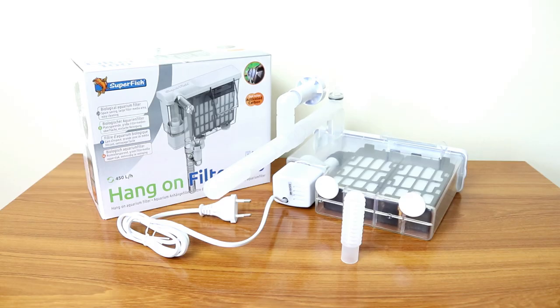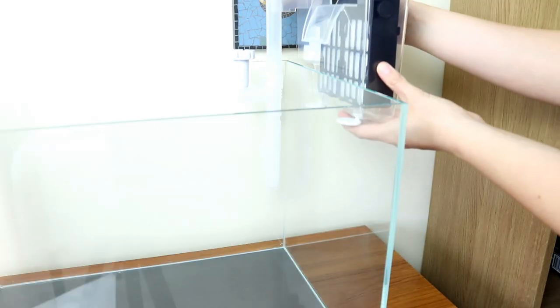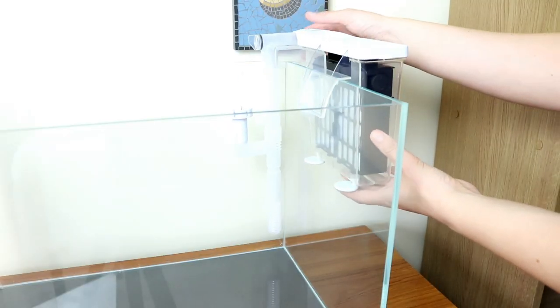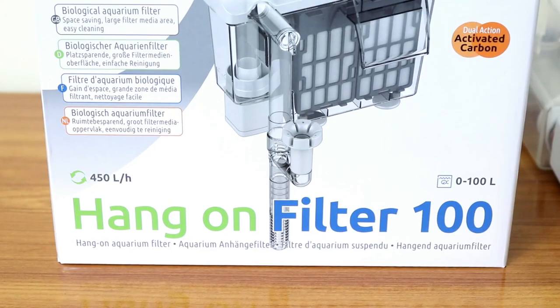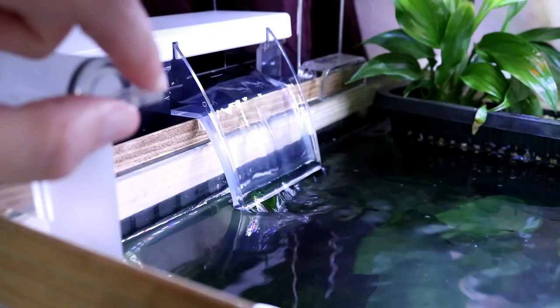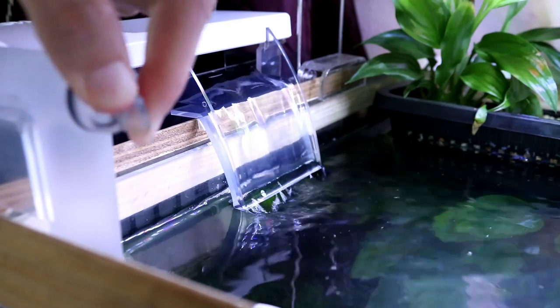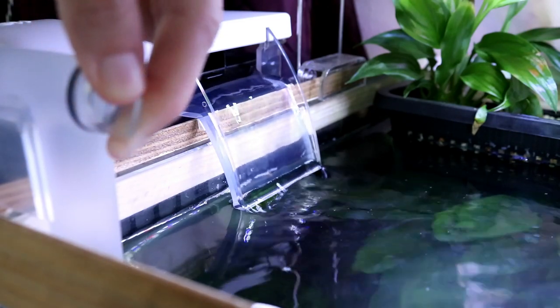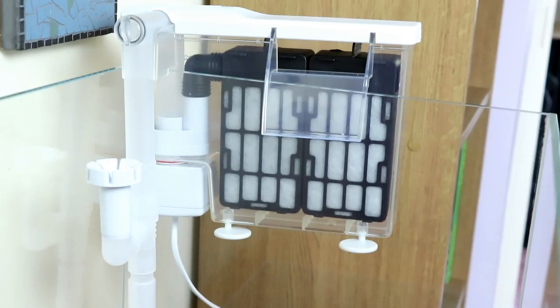The tank also comes with a Superfish 100 hang-on-back filter, which is quite a large size for such a small aquarium. It says that it's suitable for up to 100 liters, with an output of 450 liters per hour, although this can be adjusted using the dial on the front. And in all honesty, this filter is OK for what you get starting in the hobby.